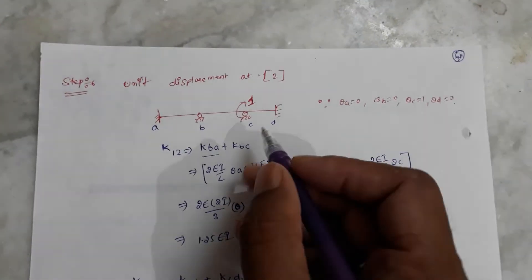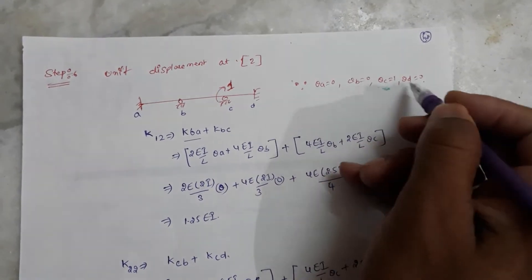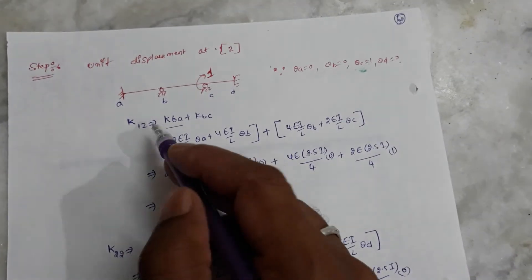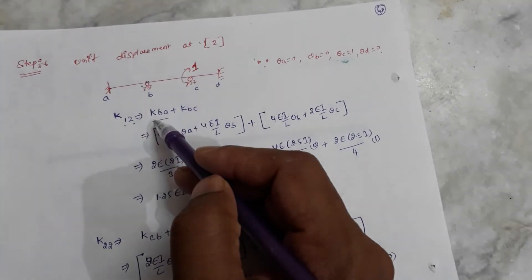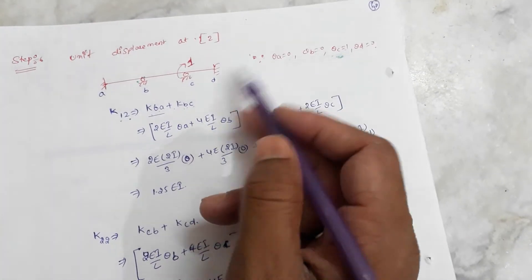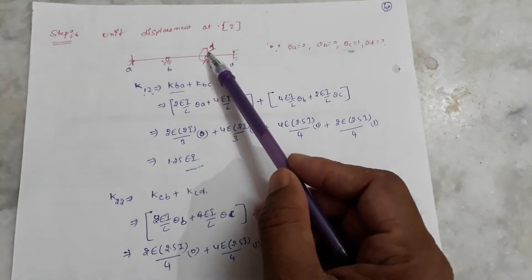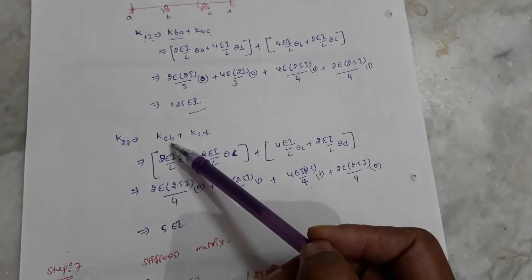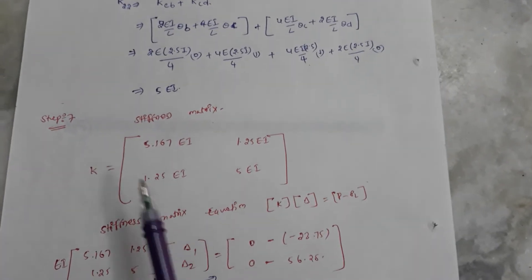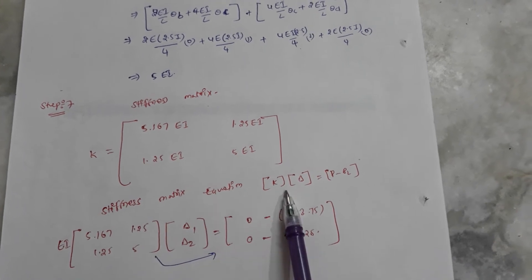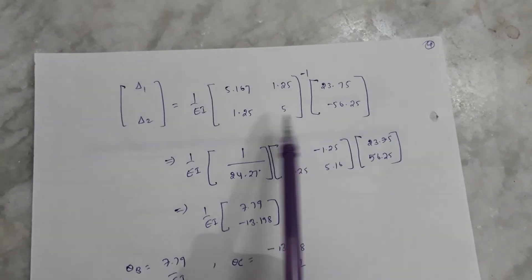We then form the stiffness matrix and solve the equation K·delta = P minus P_L. Taking the inverse of the stiffness matrix, we obtain the unknown angular displacements delta, which gives us theta B and theta C.